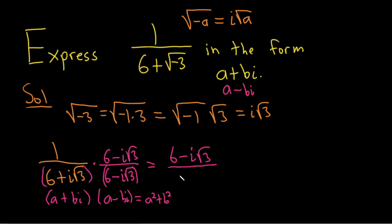So 6 squared would be 36, because a is 6, so we get 6 squared, which is 36. And then b is the square root of 3 here, so we square it and we get 3. So you've got to be really careful there. So it's 6 squared plus square root of 3 squared.